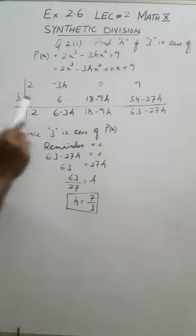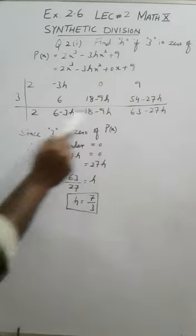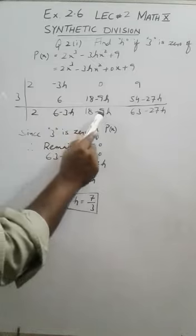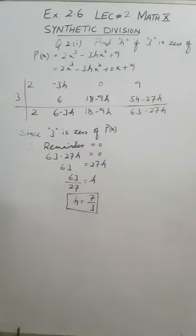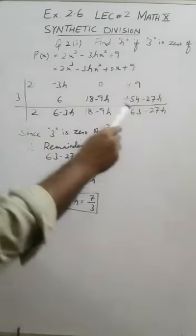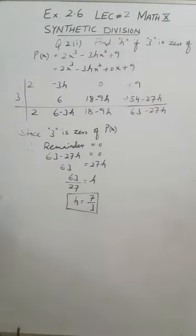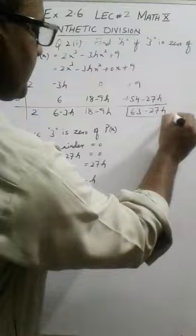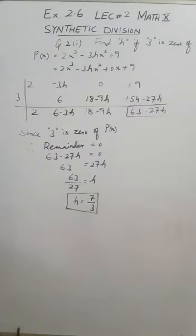So 3 into 18 is 54, and 3 into minus 9h is minus 27h. Now this will become plus 9 plus 54, so plus 63 minus 27h. This is the remainder.